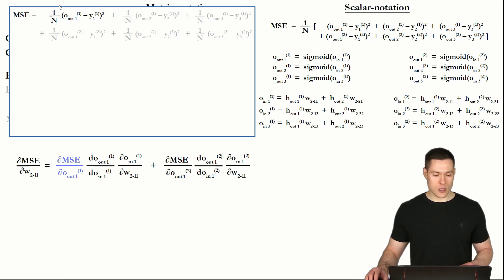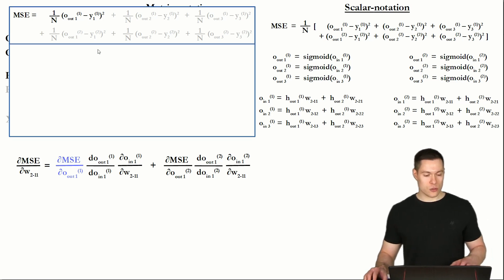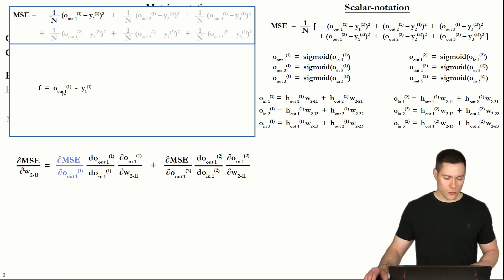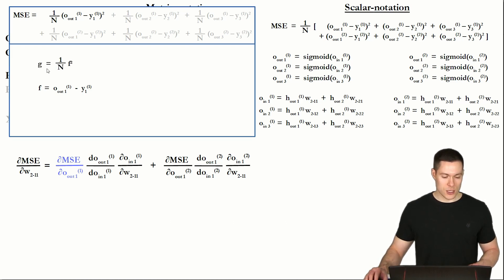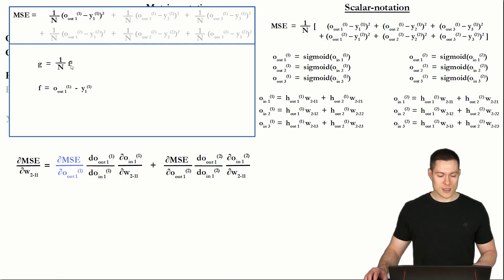The only term that's really of interest to us is this one. Here again we have to use the chain rule because there is this outer function — the squared — and this inner function in the parentheses. To really understand how taking the derivative of this function works, let's break it down into two separate functions. The first one is f, which is simply O_out 1 minus y1 — the inner function. And the other function is g, which is 1 over n times f squared — the outer function.